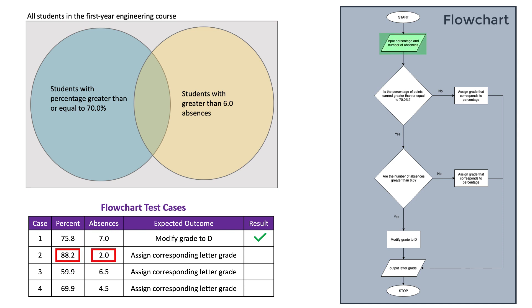Moving on to case 2, input 88.2% and 2.0 absences. For the first decision, is the percentage of points earned greater than or equal to 70%? The answer is yes, so I move down to the next decision. And, are the number of absences greater than 6.0? Here, the answer is no, so I move to the right and assign the grade that corresponds to the percentage. Again, this is the expected outcome.